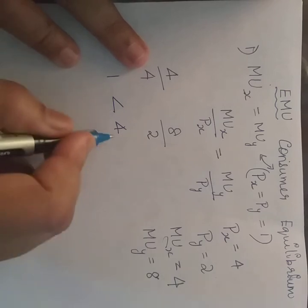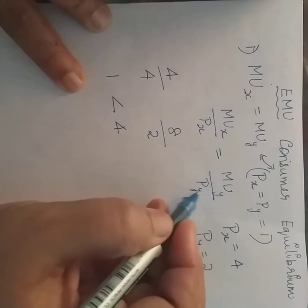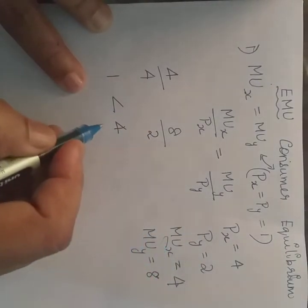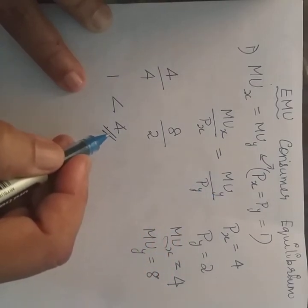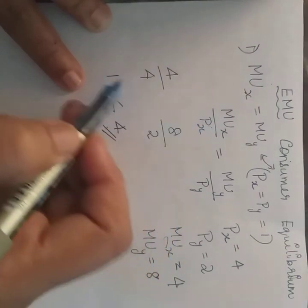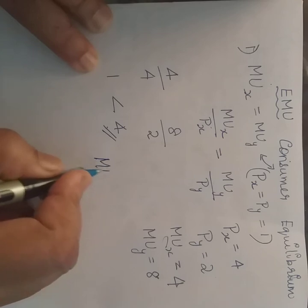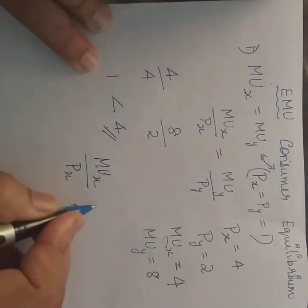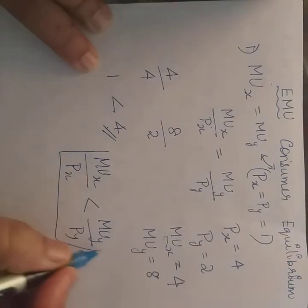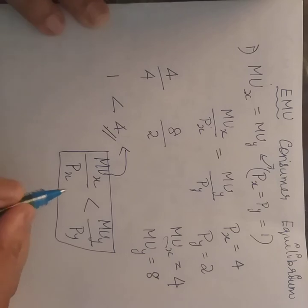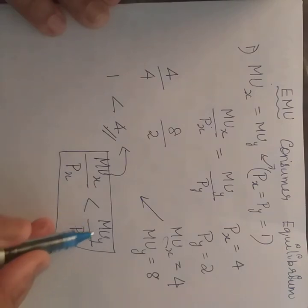Very clearly, the marginal utility of Y divided by price of Y is higher, which shows that by consuming Y the consumer is gaining more satisfaction compared to consuming X. So we can rewrite it as: marginal utility to the price of X is lesser than marginal utility of Y to the price of Y. In this case, Y is going to be more satisfying for the consumer, so the consumer will increase the consumption of Y.